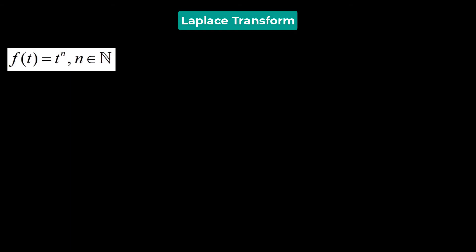Let's find the Laplace transform of the function t raised to the power of n, where n is a natural number. The Laplace transform of t^n is given by the improper integral from zero to infinity of e raised to the power of negative st times t raised to the power of n dt. We assume this integral converges for values of s greater than zero.